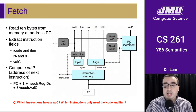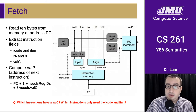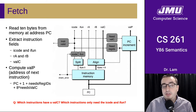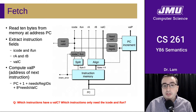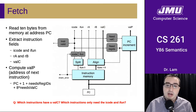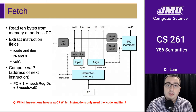Once we have all that information, we can calculate the address of the next instruction, which is useful in a couple of different places. That address of the next instruction is ValP. So that's the fetch cycle. It's worth thinking about which instructions have a ValC and which instructions only need the iCode and the iFun.